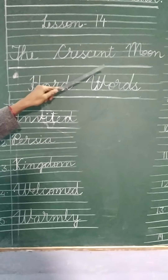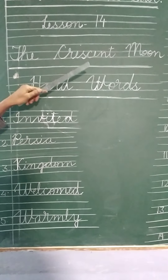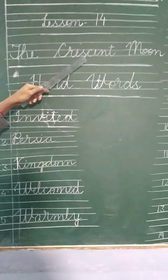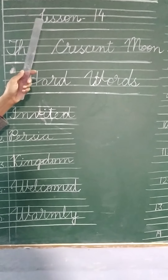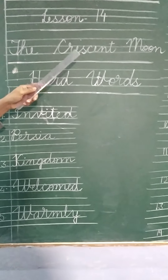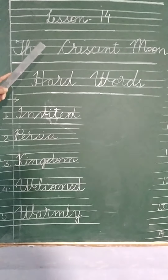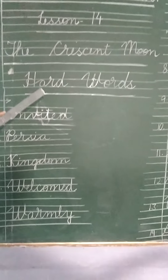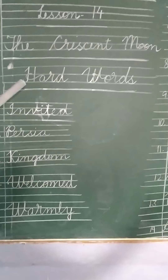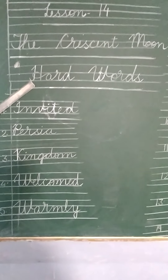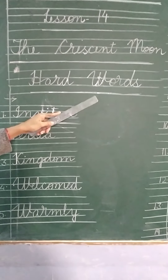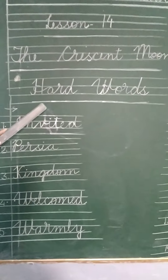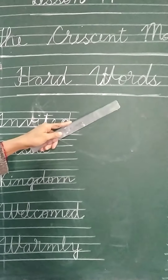Students, we have already learned about the chapter and we have already done the exercises. So today we will do hard words. The next heading is hard words. Draw the blue pencil line.